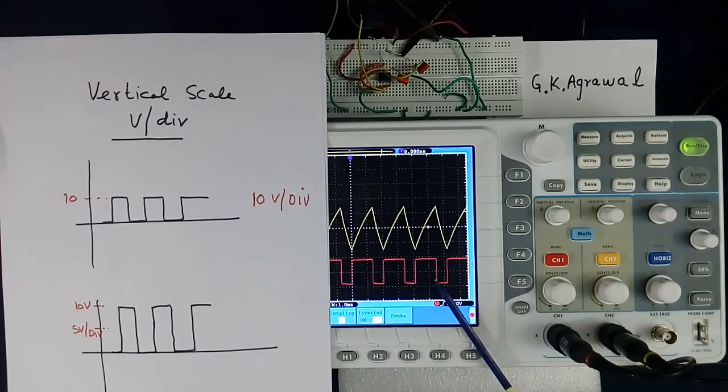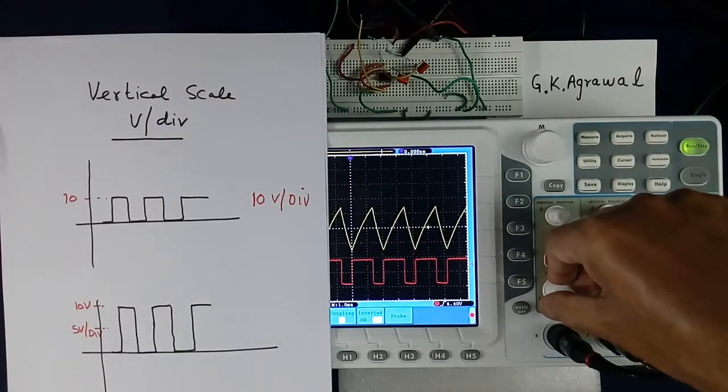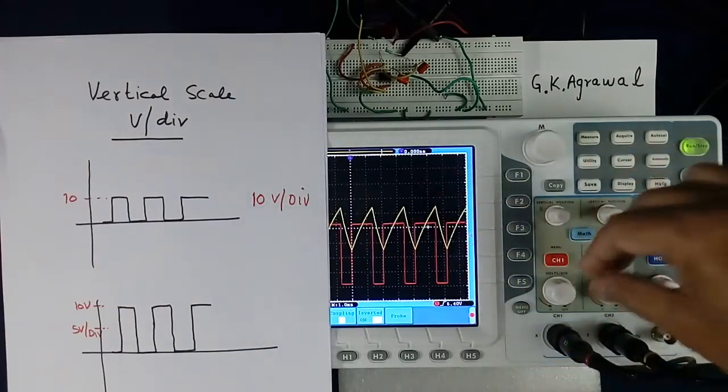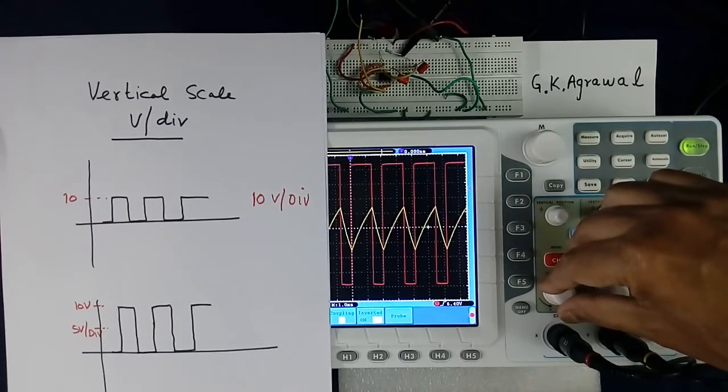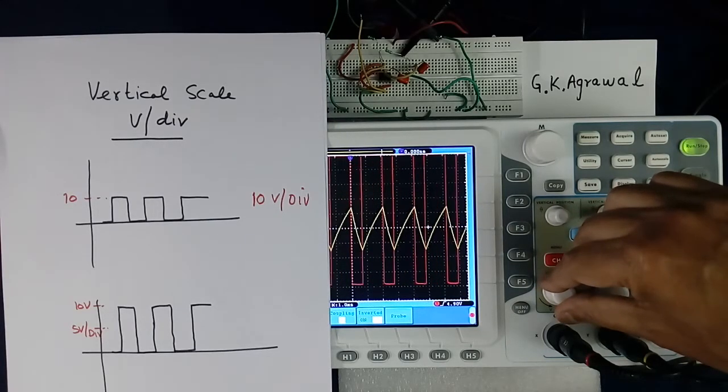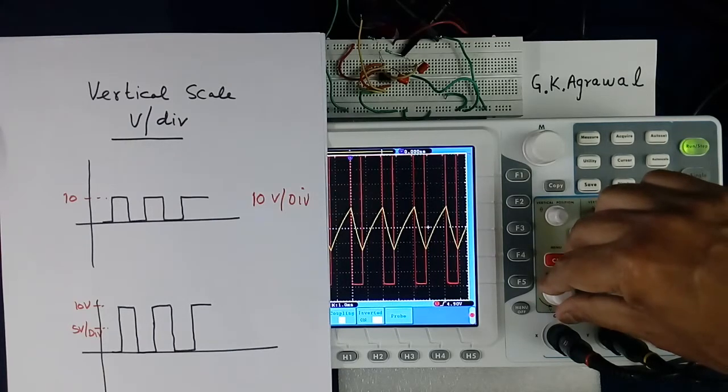Here I will show. This red color, if I change the scale, its height will increase. Signal is same, it is visible bigger. Further increase, if it goes more it may go out of range.